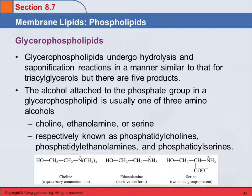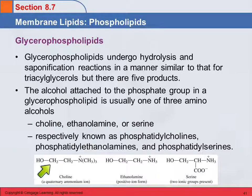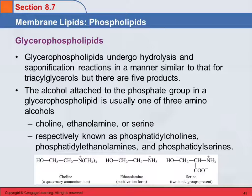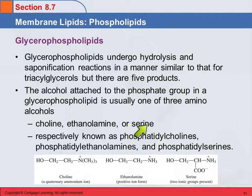The alcohol attached to that phosphate group is usually one of three amino alcohols — choline, ethanolamine, and serine. These are their ionic forms, and we see that they are amino alcohols. Through their alcohol group, they can esterify and attach to the phosphate group. When you have a glycerophospholipid with choline it's called phosphatidylcholine, with ethanolamine it's called phosphatidylethanolamine, or phosphatidylserine if it has serine as the alcohol.